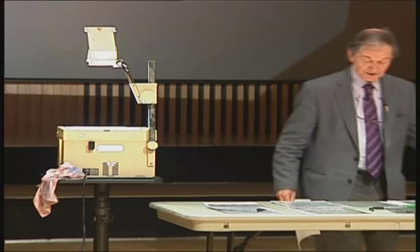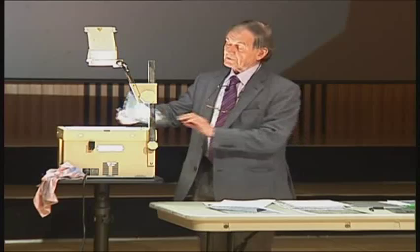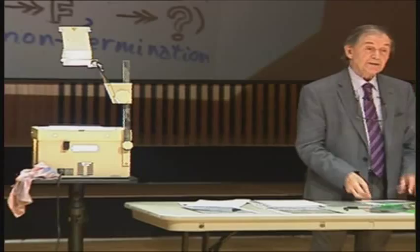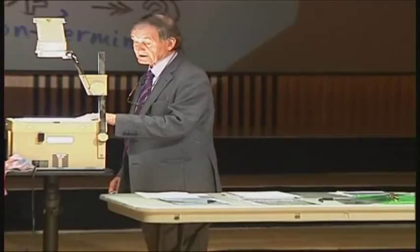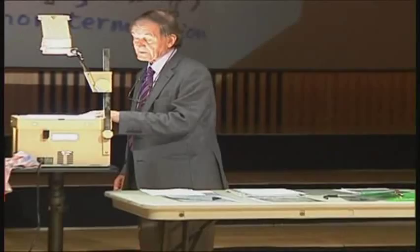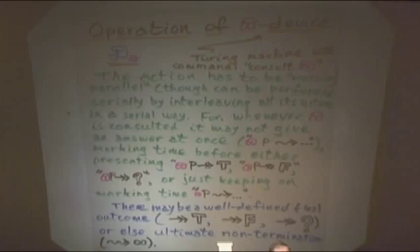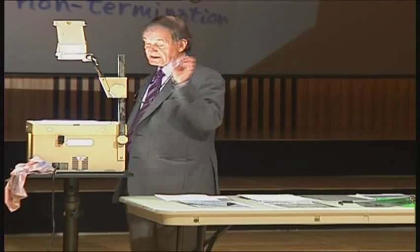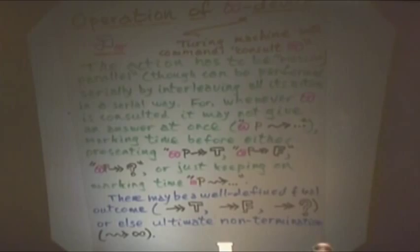I hate to use the word machine for this, because to me a machine is a computer-controlled device — something with a computer as its control system, its brain. If it's not one of those things, I don't like calling it a machine. So we call it a pomega device. You might consult this oracle from time to time, but apart from that, it's built like an ordinary computer or Turing machine. The actual device might eventually say truth, or falsehood, or say 'I don't know,' or it might go on chugging away forever.